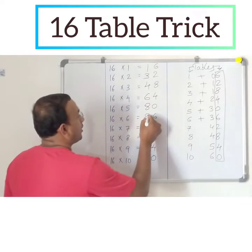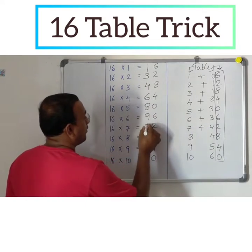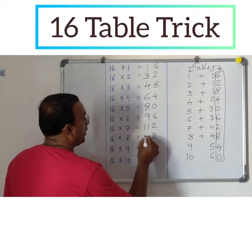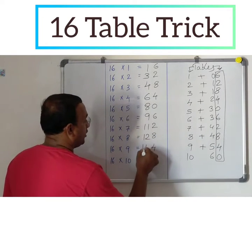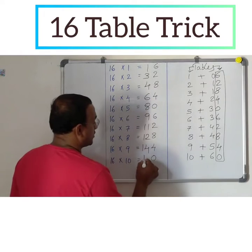Continuing: 6 plus 3 is 9. 7 plus 4 is 11. 8 plus 4 is 12. 9 plus 5 is 14. 10 plus 6 is 16.